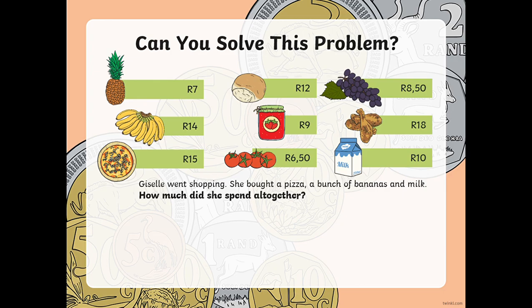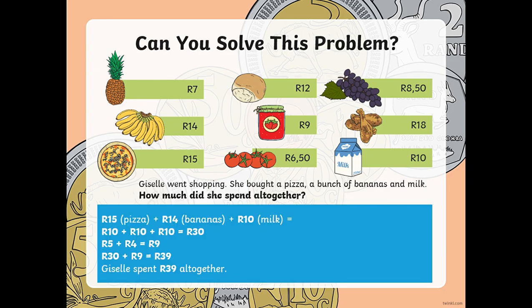Number three — can you solve this problem? Now we are in a grocery store buying some food. Giselle went shopping. She bought a pizza, a bunch of bananas, and milk. How much did she spend altogether? Giselle bought a pizza for 15 rand, a bunch of bananas for 14 rand, and milk for 10 rand. So: 15 rand plus 14 rand plus 10 rand. We bring down the 10 rand from the pizza, the 10 rand from the bananas, and the 10 rand from the milk — that gives us 30 rand. Then we bring the remainder: 5 rand from the pizza and 4 rand from the bananas, which gives us 9 rand. 30 rand plus 9 rand is 39 rand. Therefore Giselle spent 39 rand altogether.